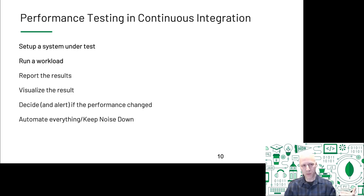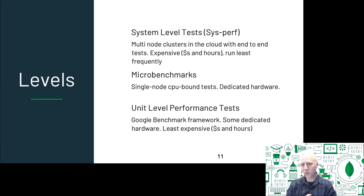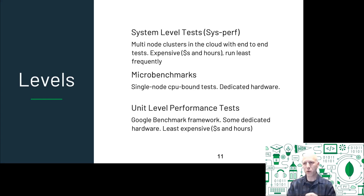We run tests at three levels at MongoDB. At the top, we have system-level tests — we call this sysperf. These are real multi-node clusters deployed in the cloud running end-to-end tests. They cost real money and take real time, but they're most representative of actual use. At the far other end of the spectrum, we have unit-level performance tests. We use the Google benchmark framework to test our C++ code. These run snippets of code — things like your lock manager or the sharding catalog — very focused tests for those sections of code. They're small, inexpensive, and very focused.